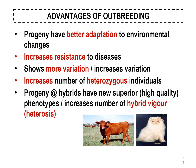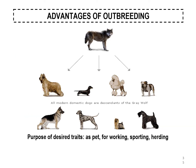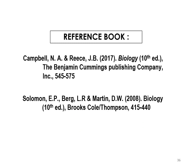The advantages of outbreeding are: progeny have better adaptation to environmental changes, increased resistance to disease, show more variation, increased number of heterozygous individuals, and the hybrid will have new superior phenotypes which increase hybrid vigor. Outbreeding is also used to produce desired traits — for example for working, sports, and herding purposes. Thank you everyone.